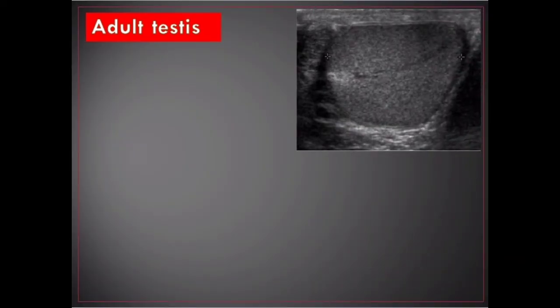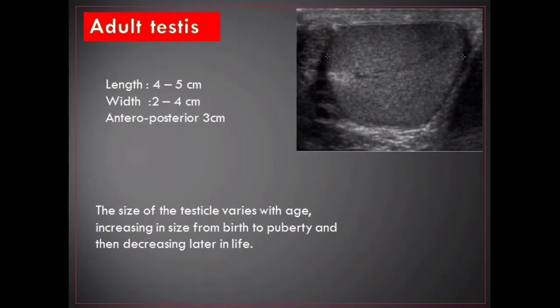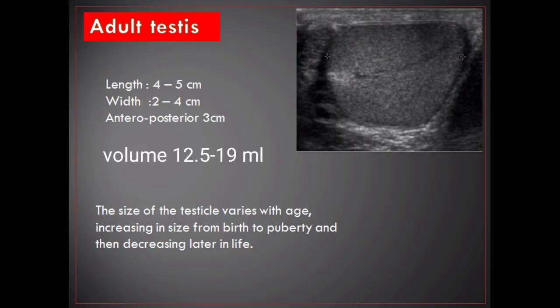Adult testes. The normal testes have a homogeneous, moderately echogenic pattern. A testicle is surrounded by thin echogenic fibrous bands representing the visceral component of the tunica vaginalis and the tunica albuginea. Normal adult testes are ovoid and measure about 3 centimeters in anteroposterior diameter, 2 centimeters in width, and 4 to 5 centimeters in length, with a volume of 12.5 to 19 milliliters. The size varies with age, increasing from birth to puberty and then decreasing later in life.